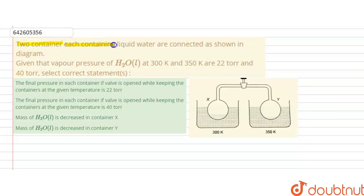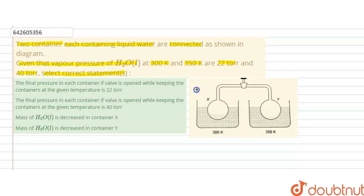Hello students. The question is: two containers, each containing liquid water, are connected as shown in the diagram. Given that the vapor pressure of liquid water at 300 kelvin and 350 kelvin are 22 torr and 40 torr respectively, select the correct statements. So in this question, we are given two containers containing liquid water — vapor pressure at 300 kelvin is 22 torr, and at 350 kelvin is 40 torr.